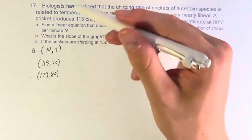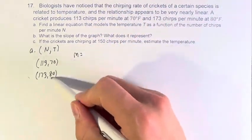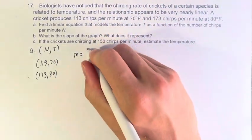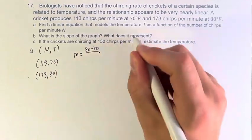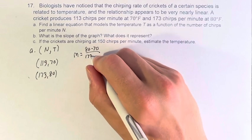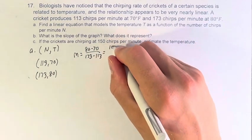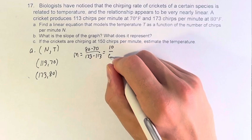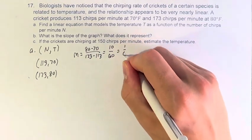We're looking to find a linear equation so we can start with the slope which is the change in the dependent variable T, 80 minus 70, divided by the change in N the independent variable, 173 minus 113. 80 minus 70 is 10, 173 minus 113 is 60, so therefore the slope is 1/6.